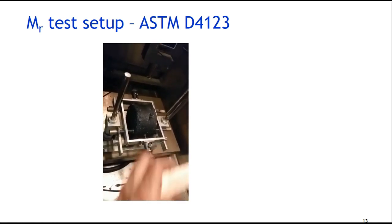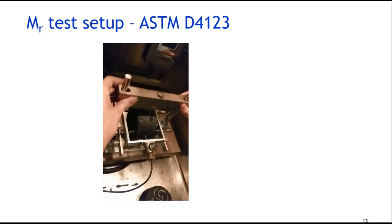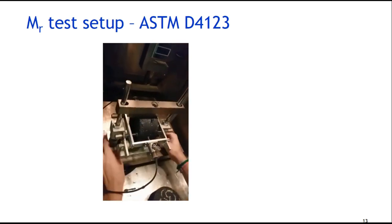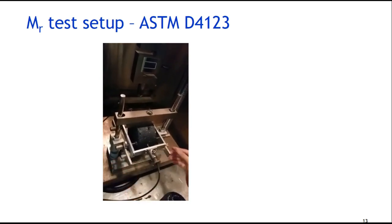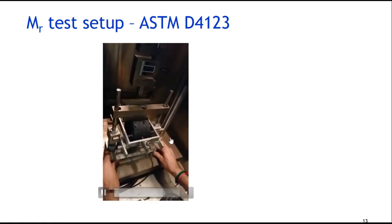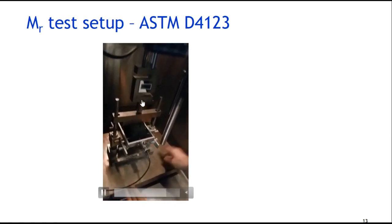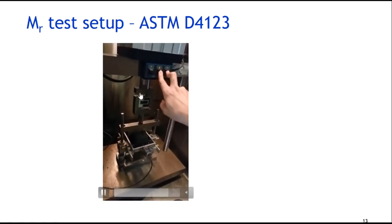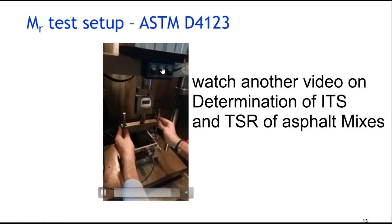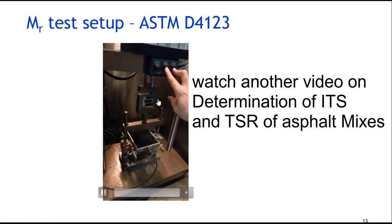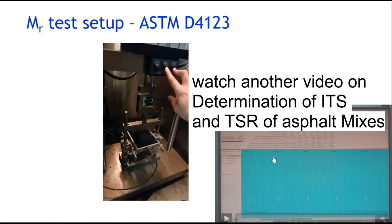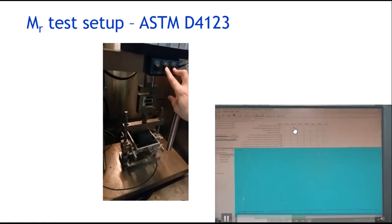We can use only horizontal deformation for measurement of MR. But if you want to know the Poisson ratio as well, we should use two more LVDTs. The loading strip is similar to ITS, along with the actuator and load cell. We apply the seating load for 50 to 200 cycles, and after that carry out the test for five cycles.